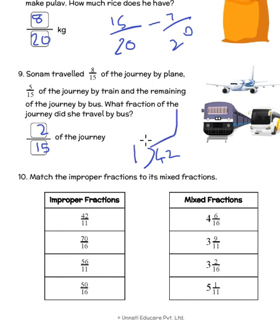So we have 11 threes are 33. And when we subtract this we get 9. So it is 3 and 9 by 11 and we see that it is across here.